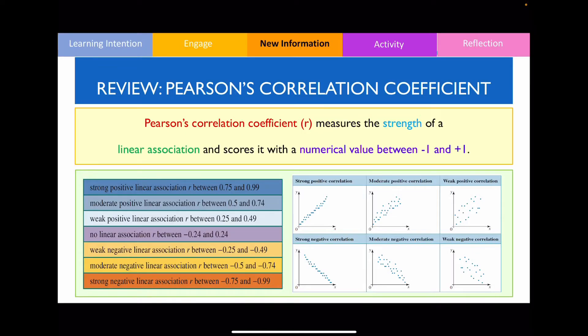Let's quickly review what is Pearson's correlation coefficient. Pearson's correlation coefficient, which is defined by the letter r, measures the strength of a linear association and scores it with a numerical value between negative 1 and positive 1.